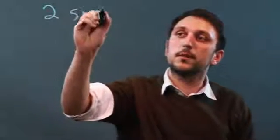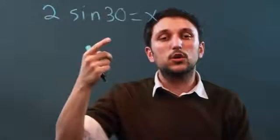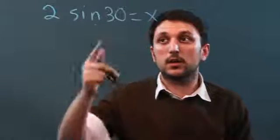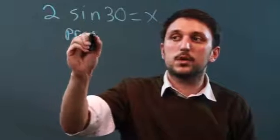The first, 2 sine 30 equals x. So in this case you're going to take out your scientific calculator and you're going to put in 30, so press 30, then the sine button